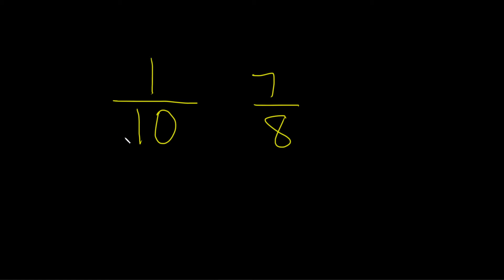So what you do is you multiply each one by what's missing. So here you have a 10 and you want it to be an 80. So you multiply by 8 over 8.